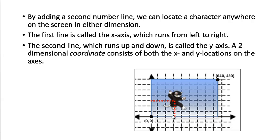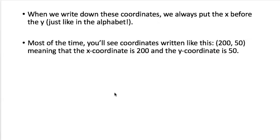The way we write these down is x then y. Usually we'll do them like this in a pair. 200 is x, 50 is y. Another way to say it is the x-coordinate is 200 and the y-coordinate is 50.